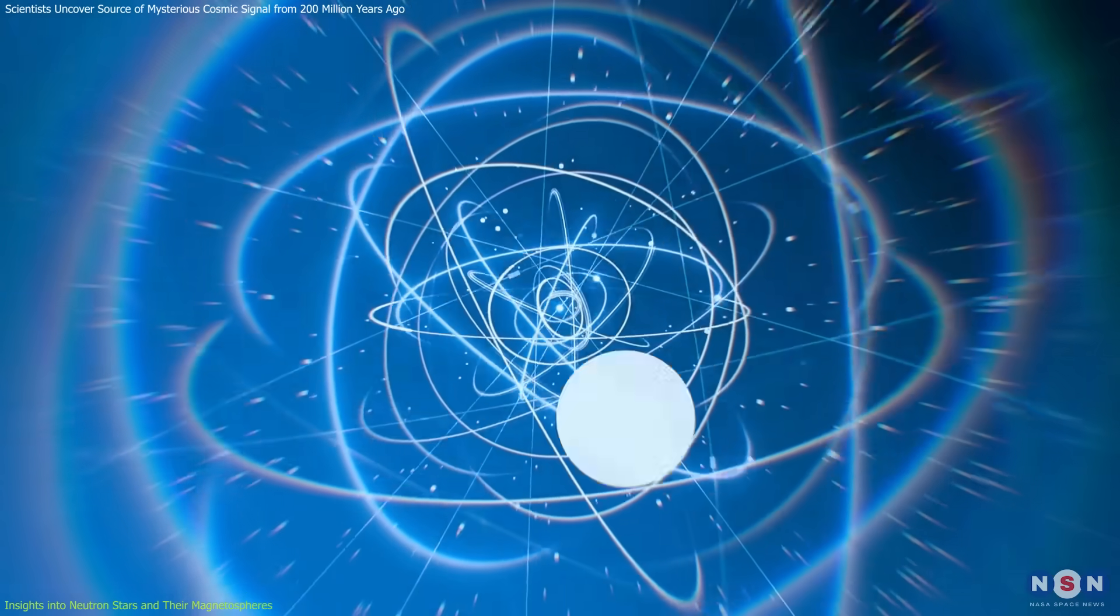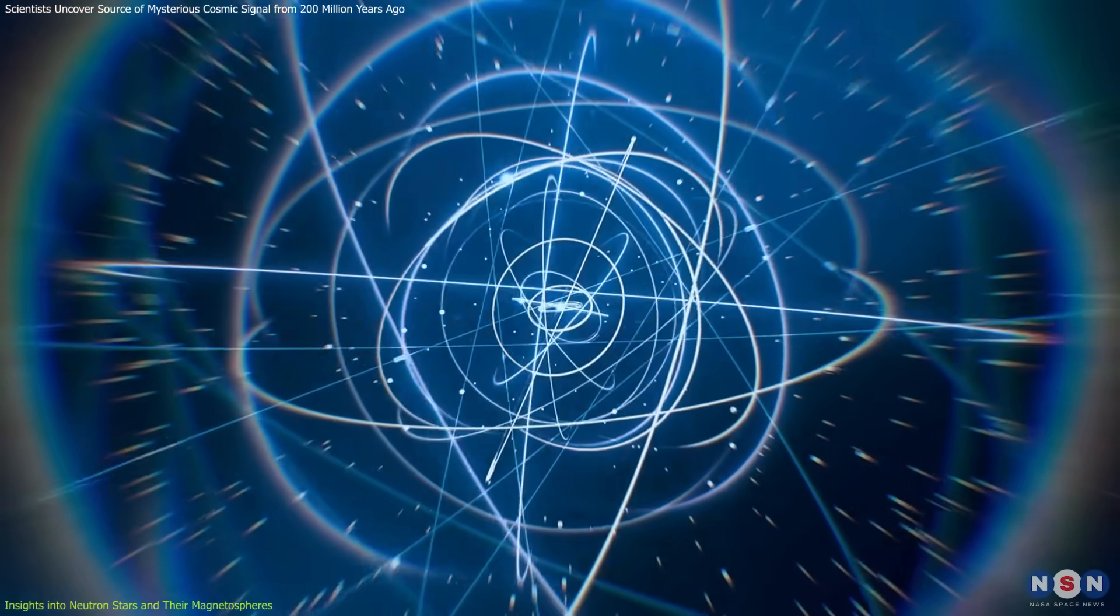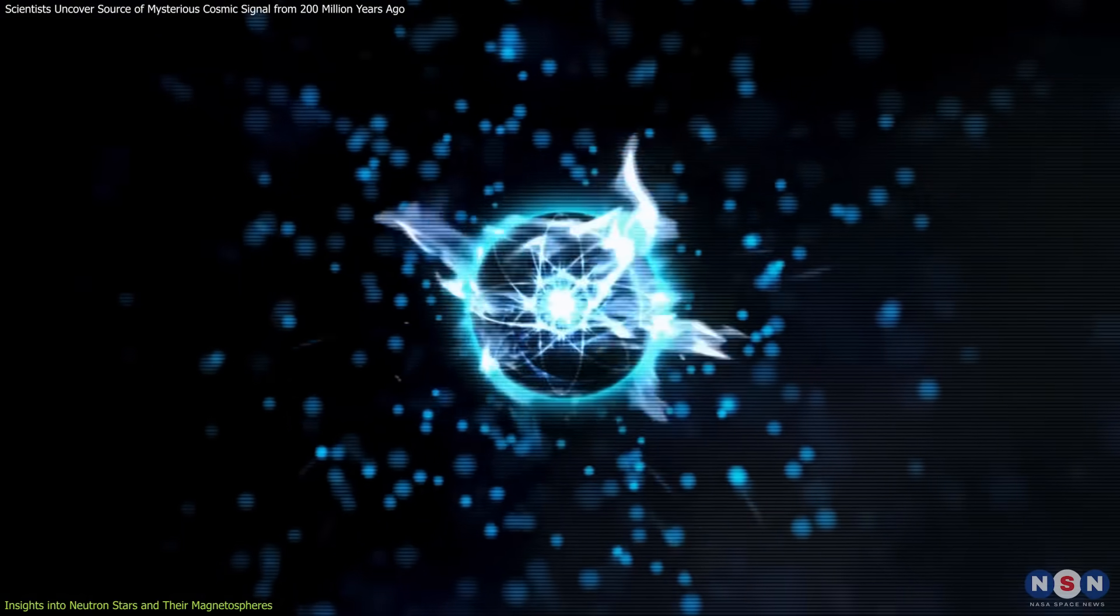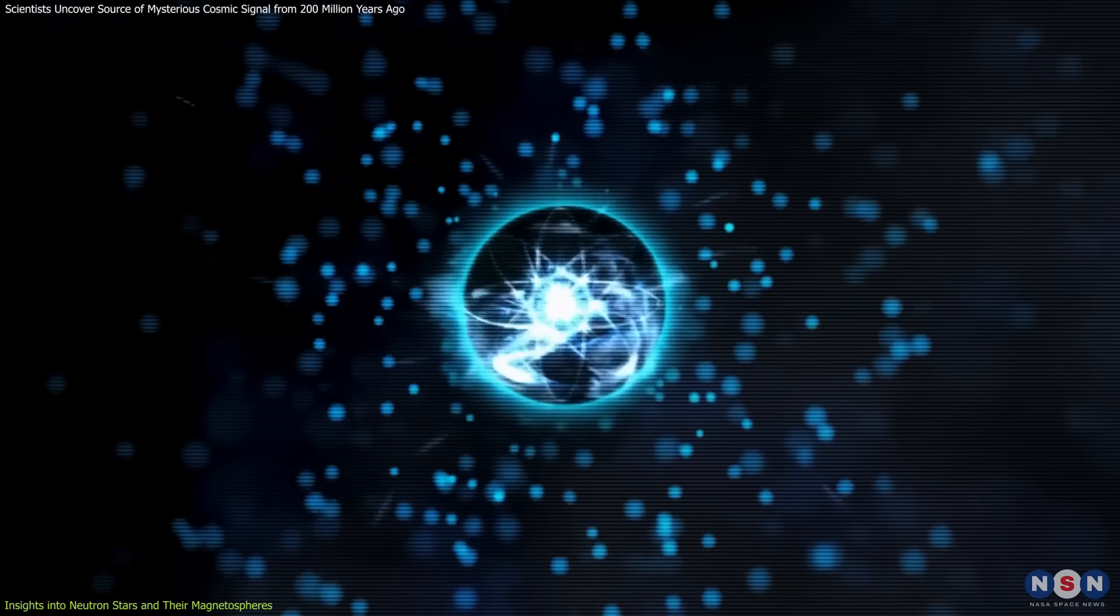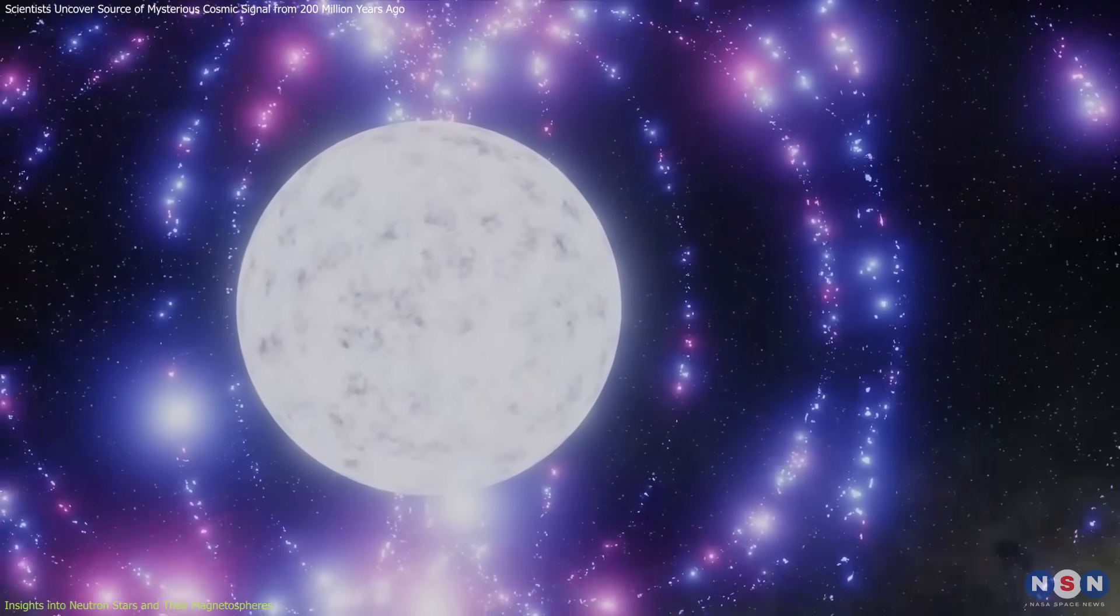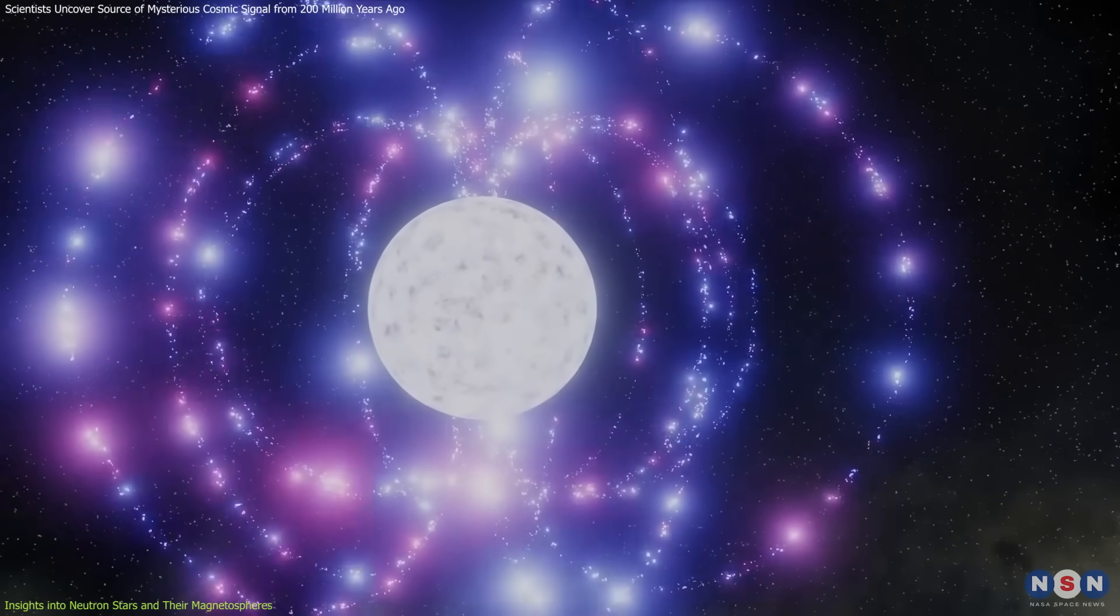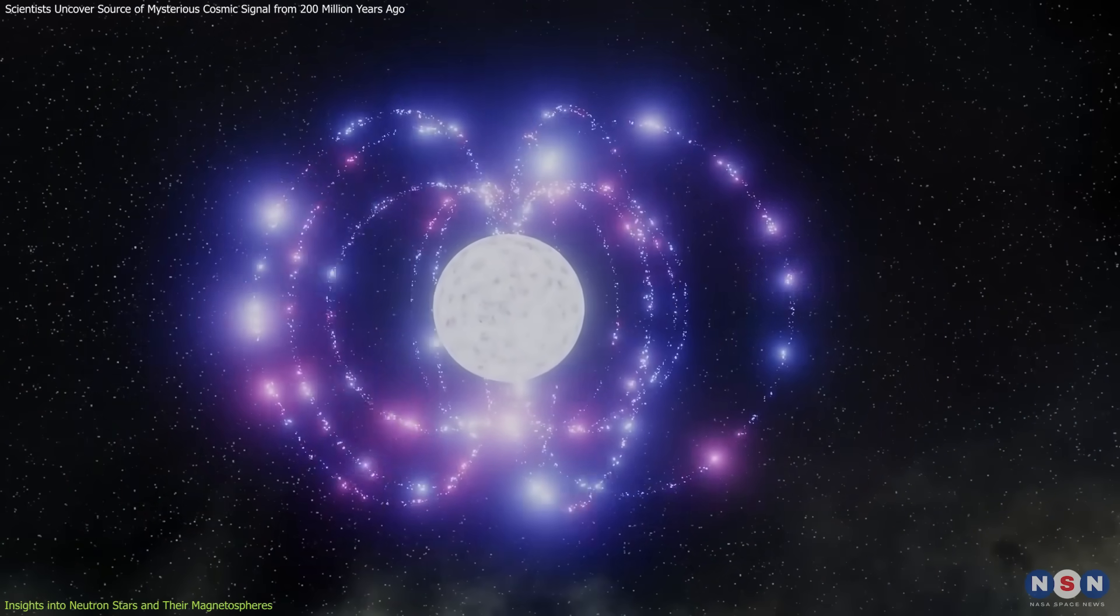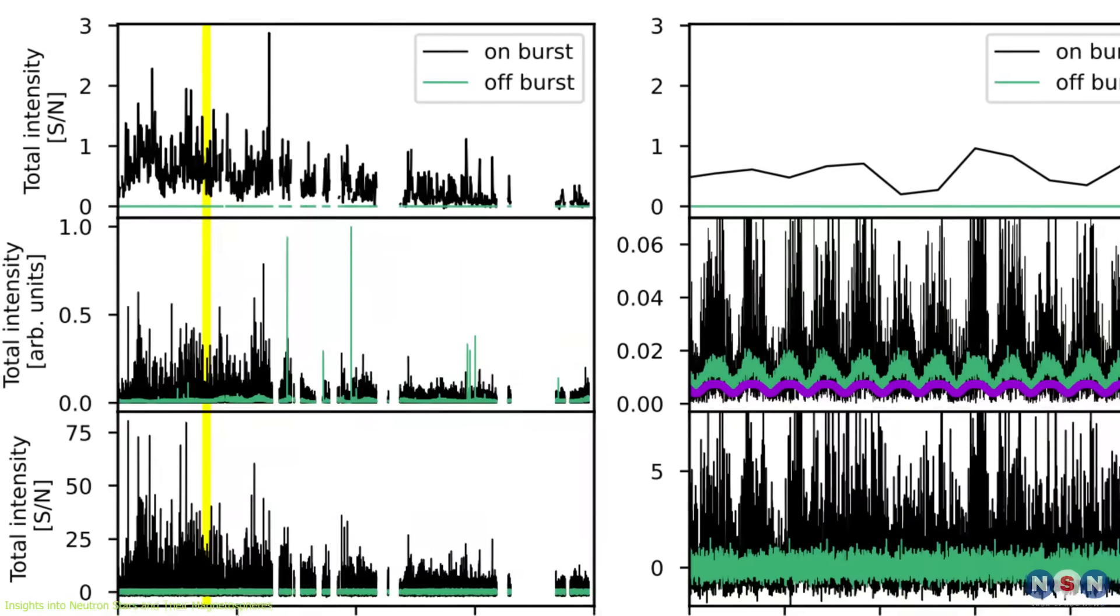These fields are so intense that they can distort atomic structures and create an environment where matter behaves in ways that defy our understanding. The magnetospheres of magnetars are regions dominated by these extreme magnetic forces.